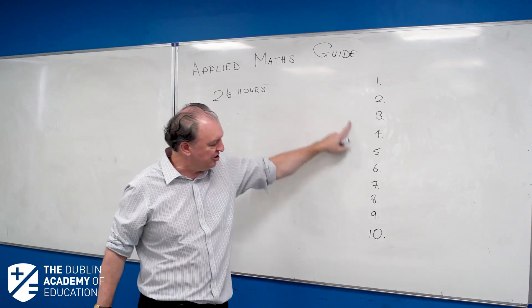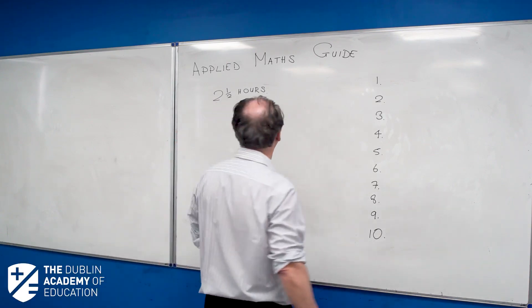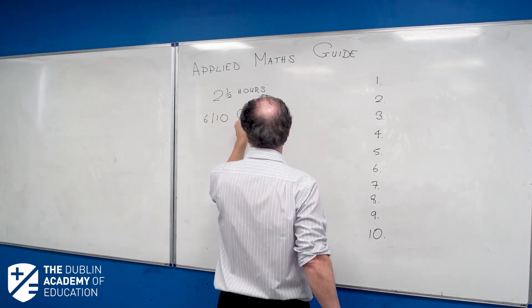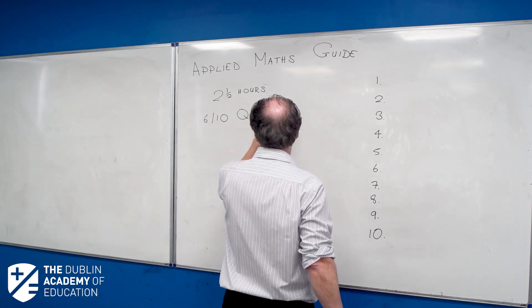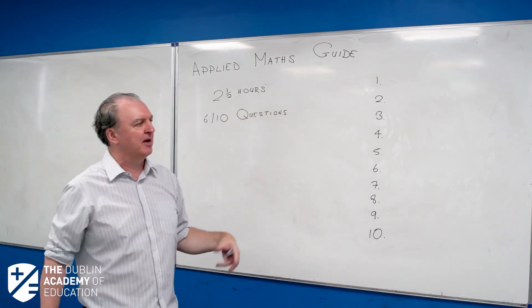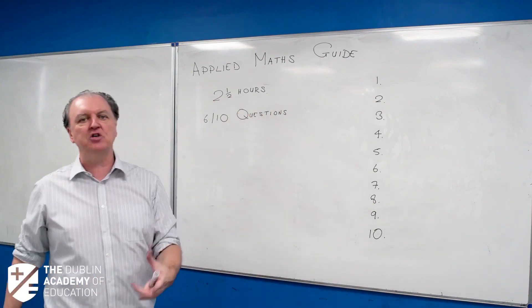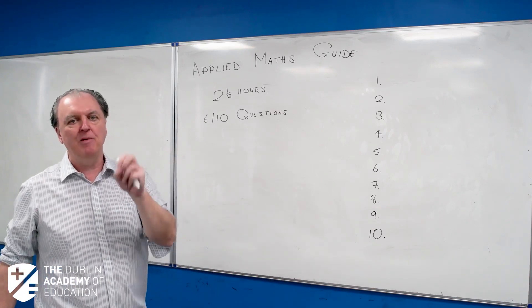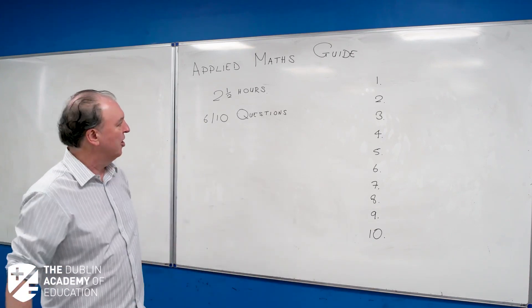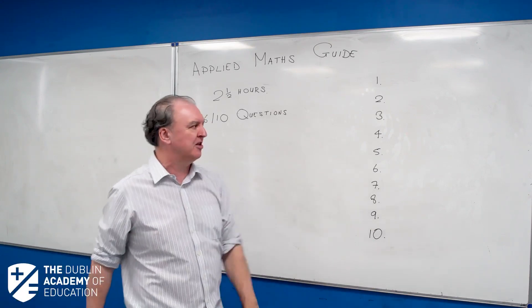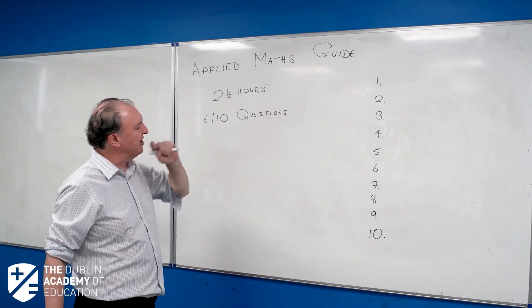What you have to do is answer any six out of ten questions. They don't mix them around. So if you pick Moments of Inertia, you're guaranteed that question will be on Moments of Inertia. The questions you pick, you're pretty much guaranteed they'll be in the right places.